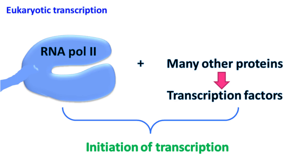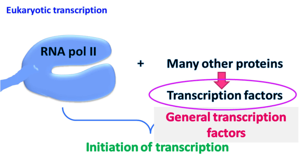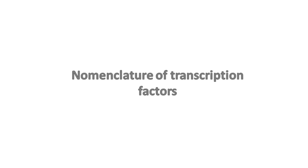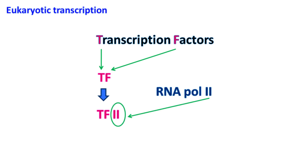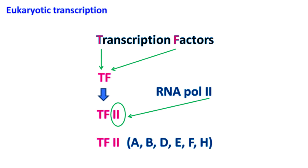The transcription factors are also known as general transcription factors. Let's see how they are designated. The initial two letters are written as TF, which stands for transcription factor. The two indicates it's a transcription factor for RNA polymerase II. The letter next to two can be A, B, D, E, F, or H, depending on the function of the transcription factor.